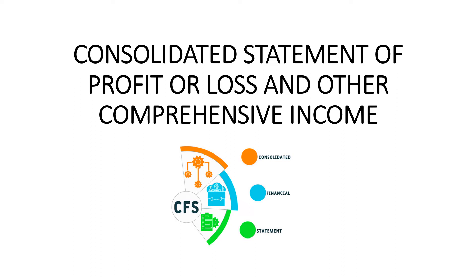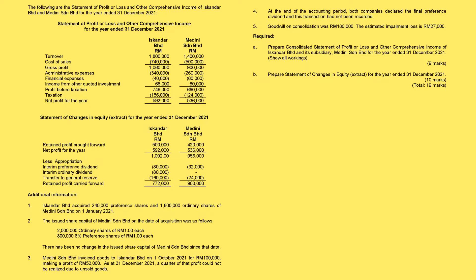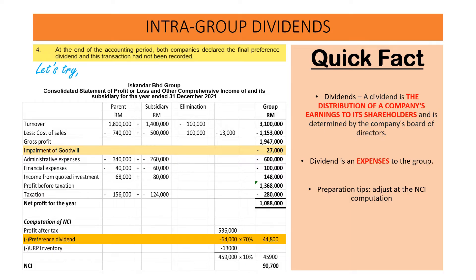In the consolidated statement of profit and loss and other comprehensive income, we will now look at the fourth additional information. The fourth additional information is basically referred to the dividend.